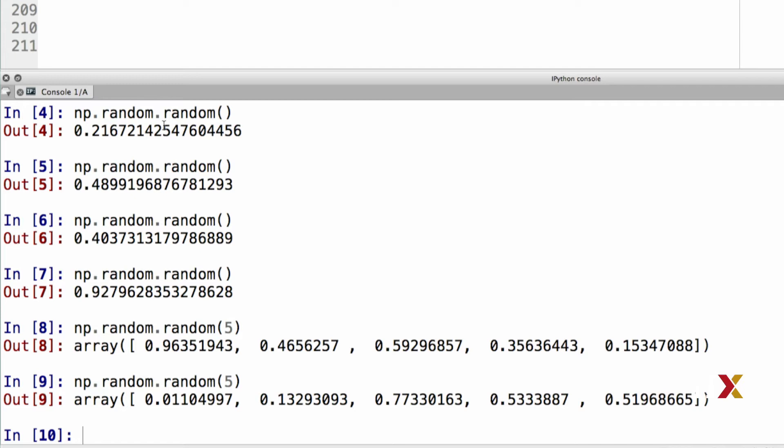It's also possible to use the same function to generate a 2D array of random numbers. In this case, inside the parentheses, we need to insert as a tuple the dimensions of that array.